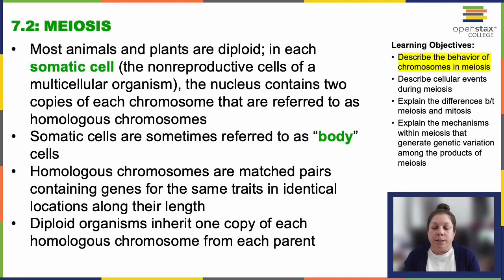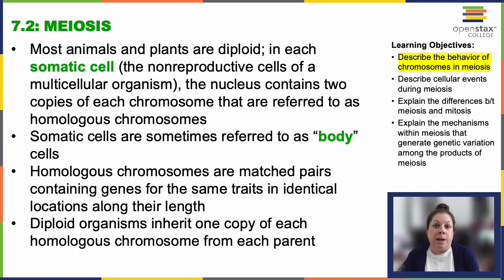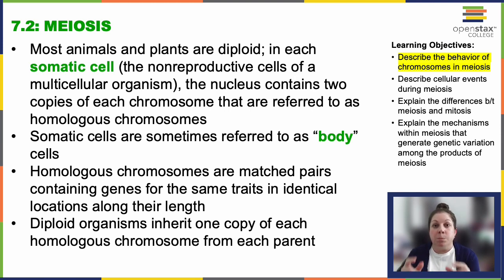For example, let's say you have a parent who has blue eyes and a parent who has brown eyes. If we were to look at those chromosomes at the locus of the eye color gene, we would see one chromosome would have the allele for blue and one would have the allele for brown. They would be in the same spot on these homologous chromosomes. Hopefully that helps you understand.